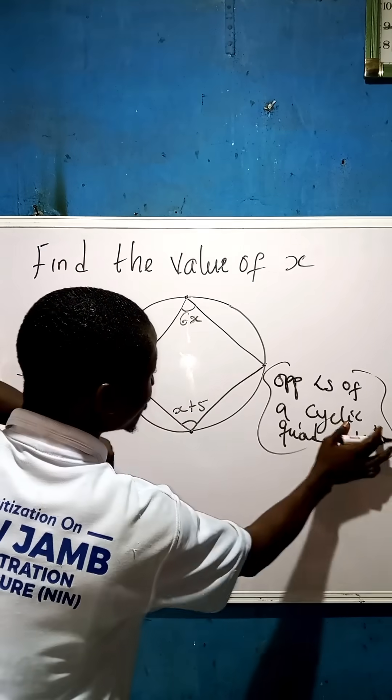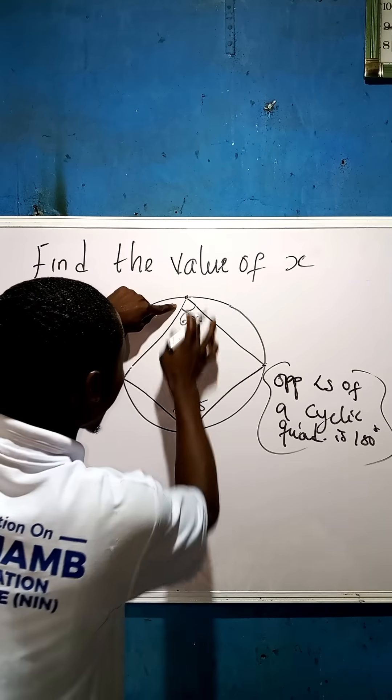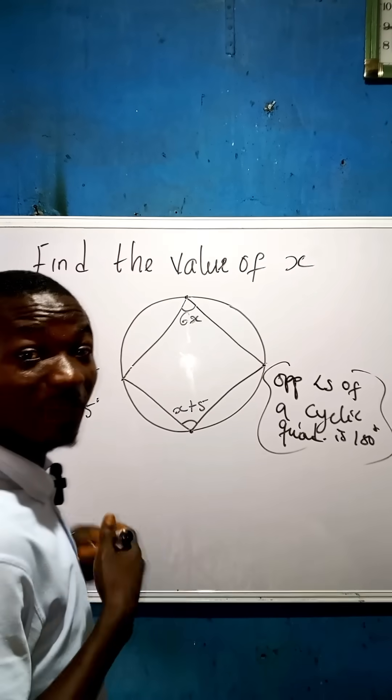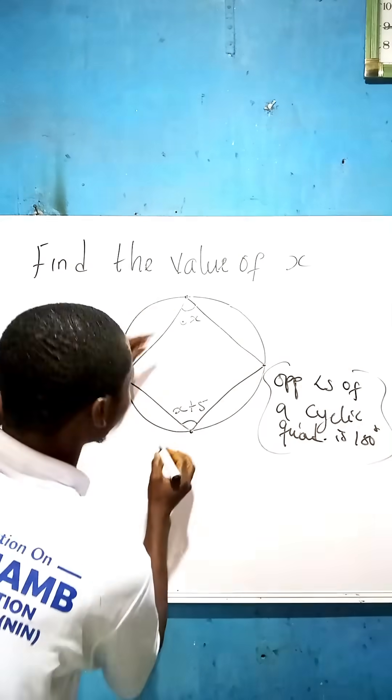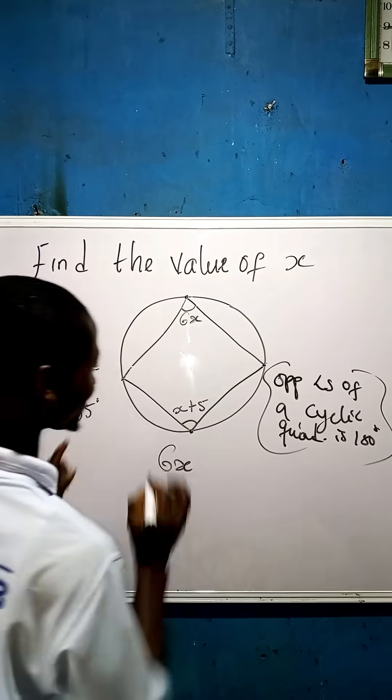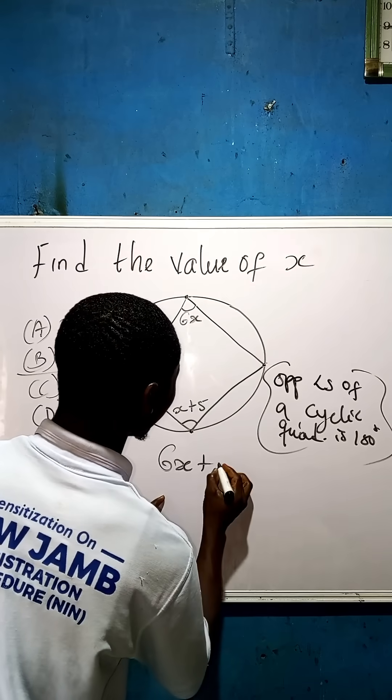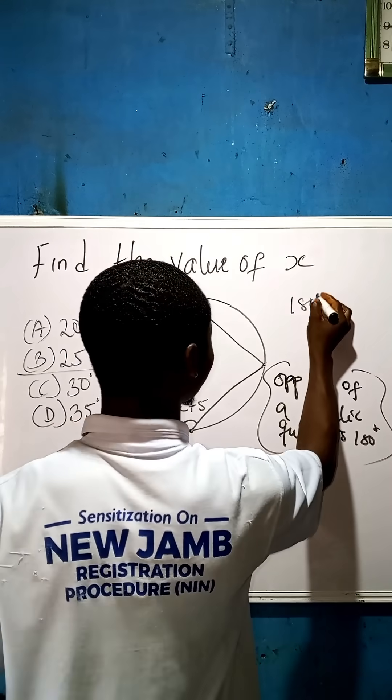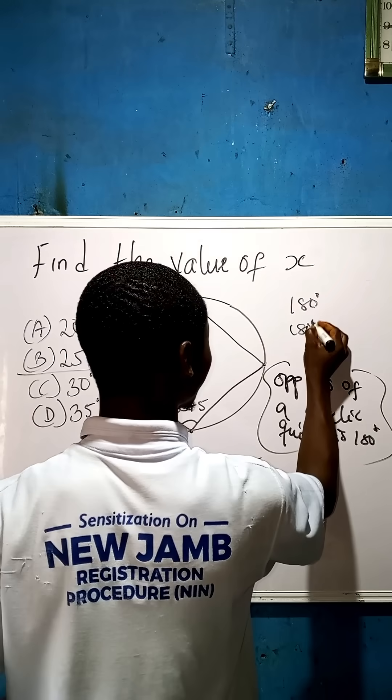Now, what are we going to do? We make use of that theorem, which says here and here is equal to 180, and here and here is equal to 180. It's a law. It means that 6x plus x plus 5, because here and here is supposed to give us 180 degrees.